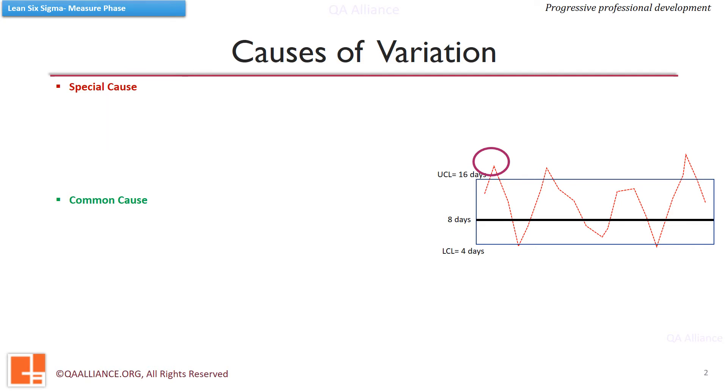These instances may have occurred because of some special cause, which are assignable causes and we can correct them. These points beyond control limits are also called outliers. Process variation due to special causes generate unnatural patterns. This kind of variation is unpredictable.